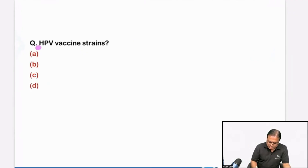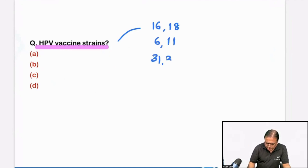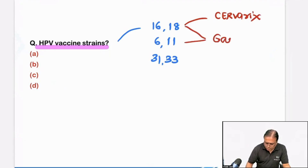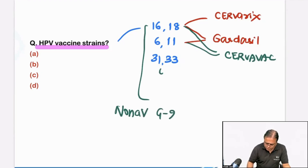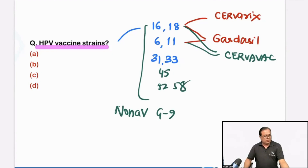We have Cervarix, which is bivalent. We have Gardasil, which is quadrivalent. We also have India's own vaccine, Cervavac, which is quadrivalent. And we have a nonavalent vaccine, Gardasil 9, which includes strains 45, 52, and 58 also. In case there is a question on human papillomavirus vaccine viral strains.